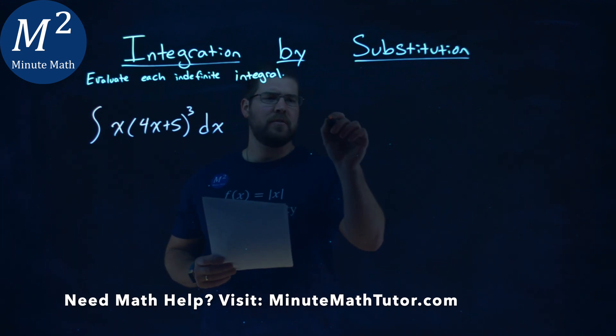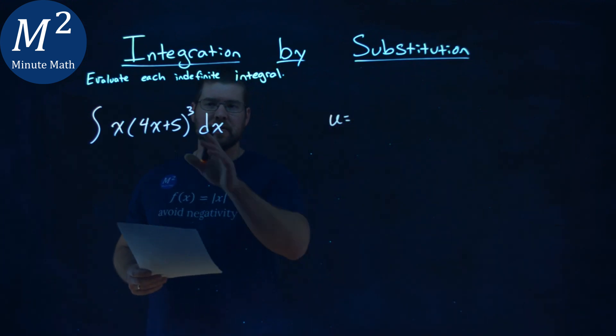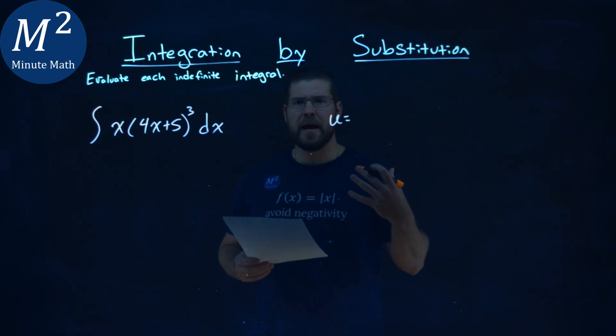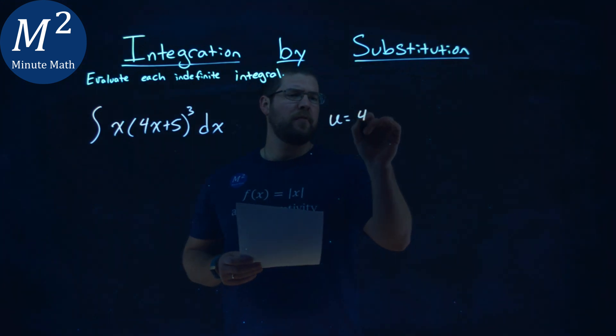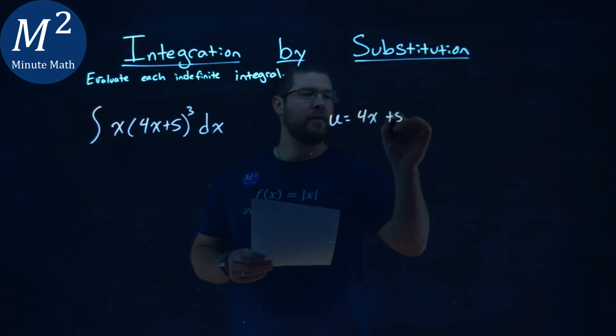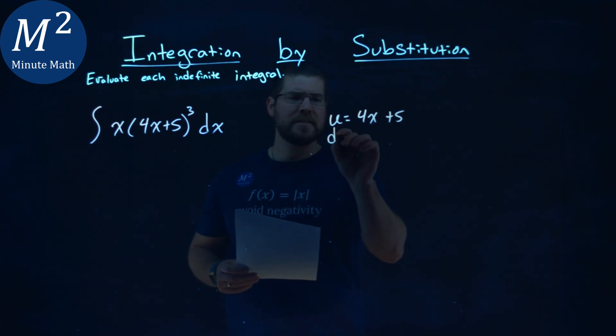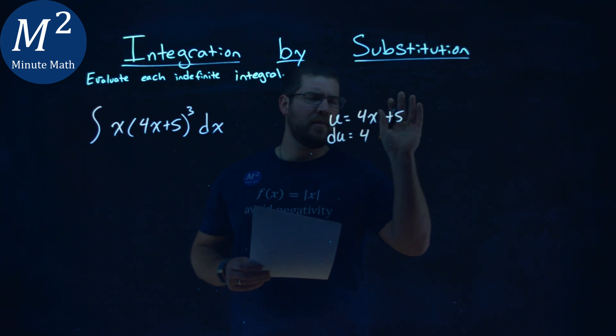Now, I want to use my u substitution, and I generally just set my u value to be what's inside the parentheses and see what happens. So let's do that: 4x plus 5 right there. If that happens, our du is equal to, well, the derivative of 4x is just 4, and the rest is 0, so we have 4 dx.